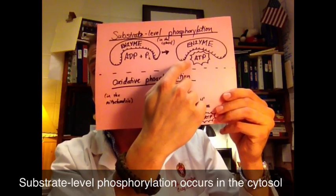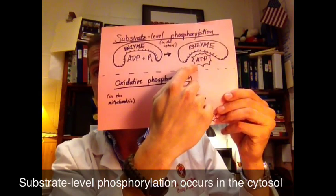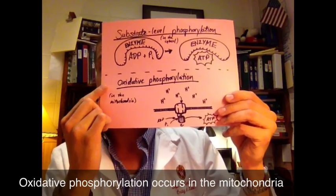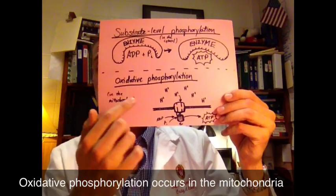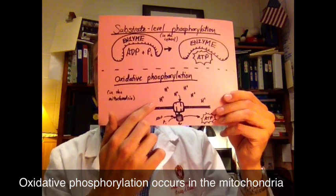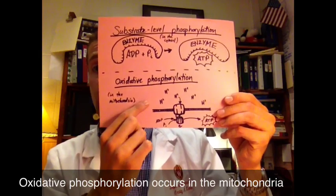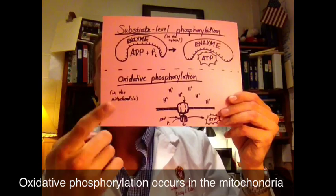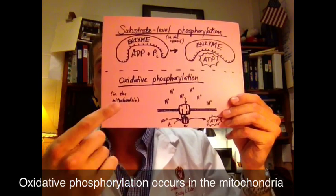The other kind is oxidative phosphorylation. In oxidative phosphorylation, we have hydrogen in the intermembrane space of the mitochondria. As that hydrogen moves through ATP synthase, it causes ATP synthase to turn. When ATP synthase turns, it combines ADP and PI into ATP.